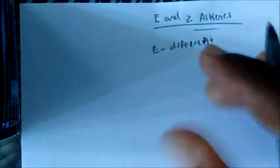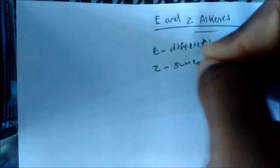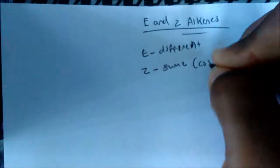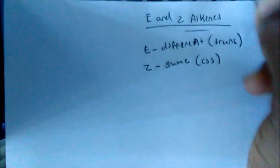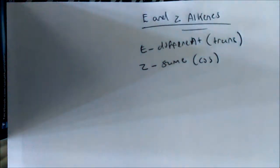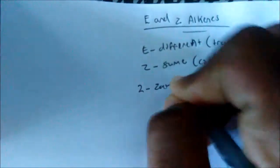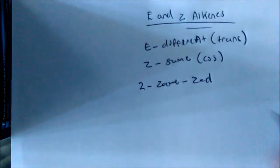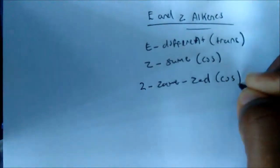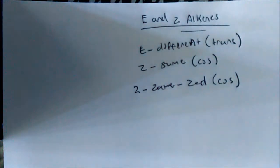E and Z alkenes. The first thing we want to know is that E stands for different, Z stands for same. This just implies that E is trans and Z is cis. If you cannot remember that, remember this slogan: 'Zame Z' — this implies that Z would be the same, which means cis. So if you remember this, you know that E would be the different one.